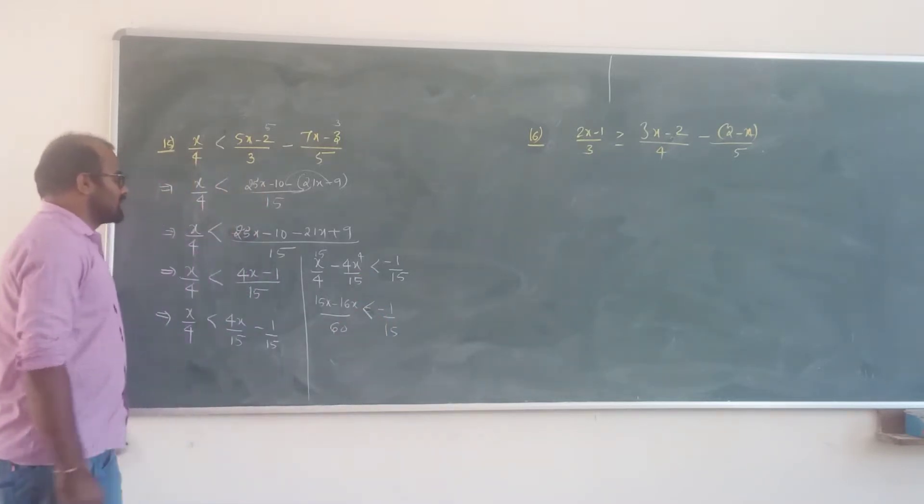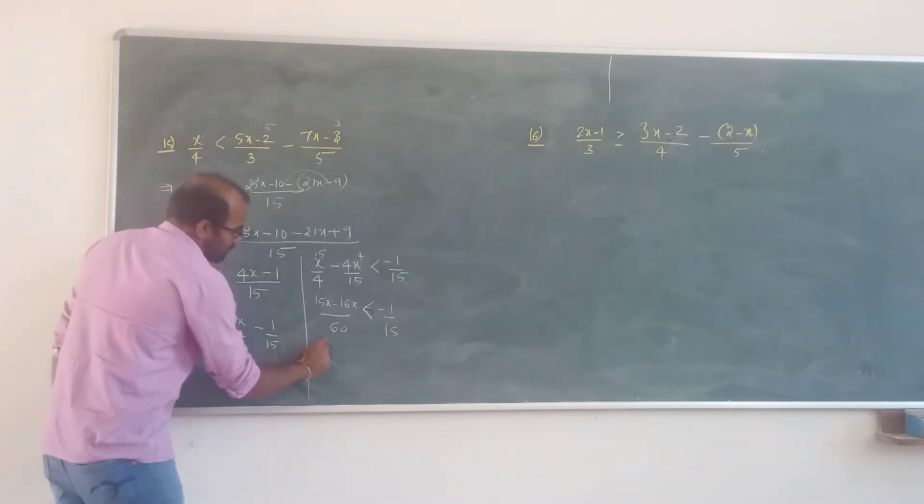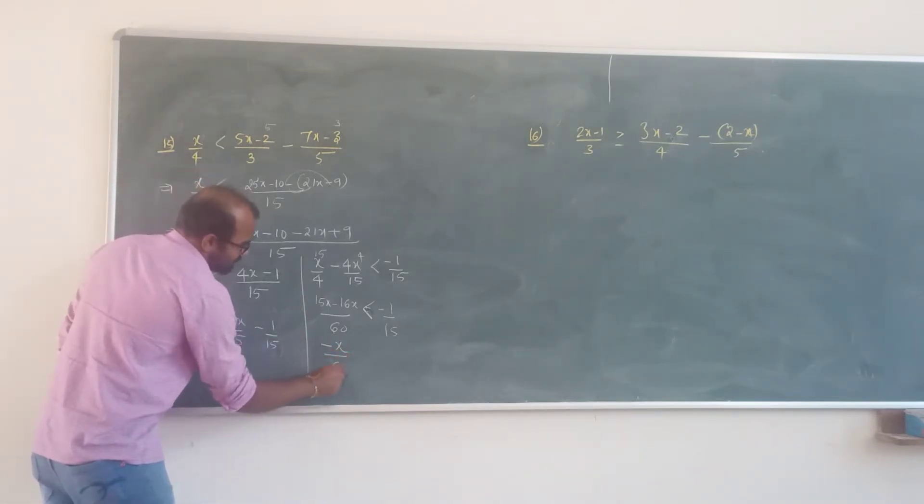So, x would be minus 1 upon 15. x by 16 is less than minus 1 upon 15.